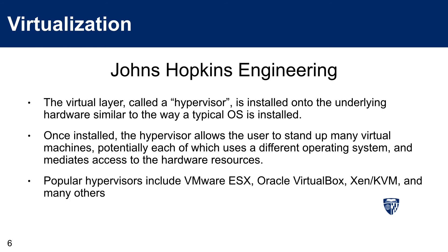We call this layer a hypervisor. One popular hypervisor is VMware ESX — you install it from a disk like any operating system, and it has special kernel-level access to act as that broker between the virtual machines and the hardware. Other popular hypervisors include Oracle VirtualBox, which is a popular desktop hypervisor, and Xen and KVM, which usually come bundled with CentOS and Red Hat Linux.